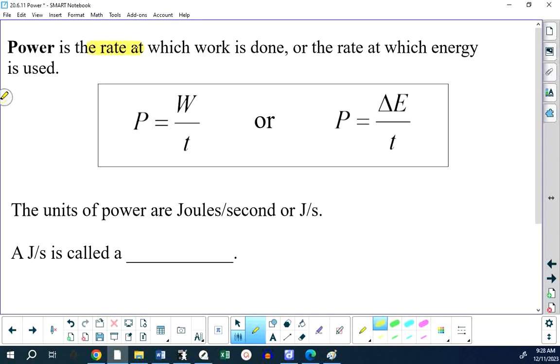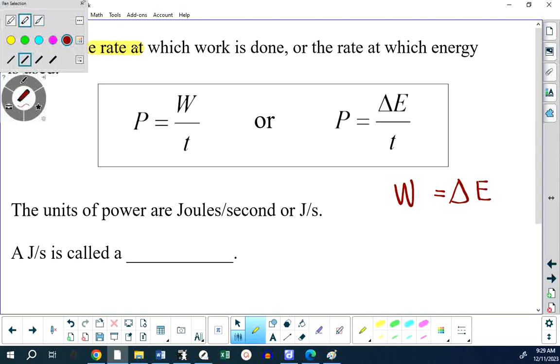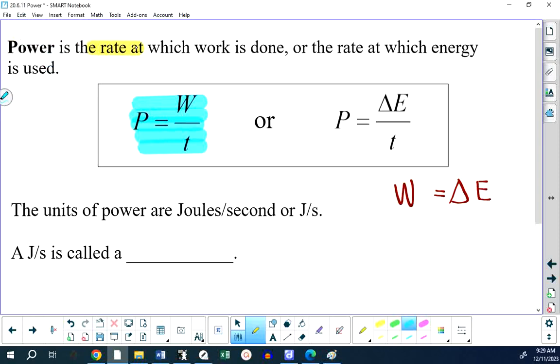So power, the symbol for power is capital P, is equal to the work done divided by the time. But since work is change in energy, we can also write power equals change in energy over time. It turns out that this is the formula that appears on your formula sheet and not work over time. But I think it would be better if you thought of it as change in energy over time.